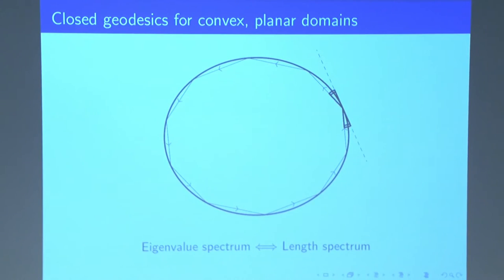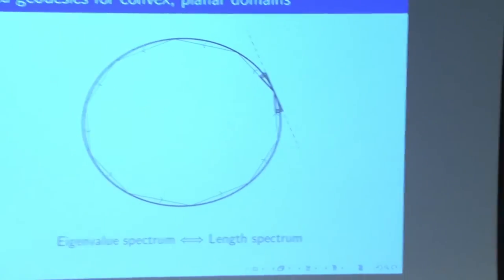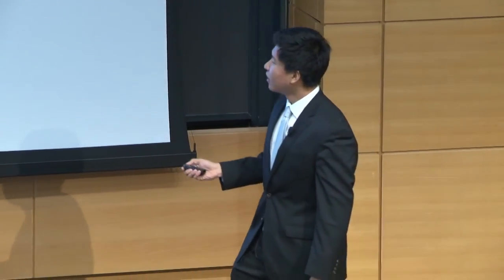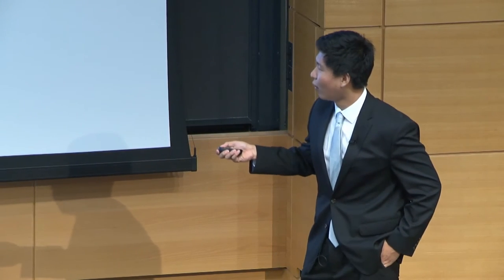Closed geodesic just means it comes back to its original spot. And if we take the number of reflections in our closed geodesic, take it to infinity and see the rate at which the length of this path approaches the perimeter of our drum, what we have is known as the length spectrum. And the non-trivial result that was derived in the 20th century is that somehow this eigenvalue spectrum, which is the solutions to this wave equation, is related to how this billiard ball bounces off this drum. This is pretty wild to think about.